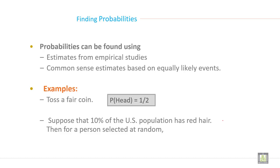Probabilities can be found using estimates from empirical studies or common sense estimates based on equally likely events. Example: toss a fair coin. Probability of head equals 1/2 because there is a chance of head and tail.